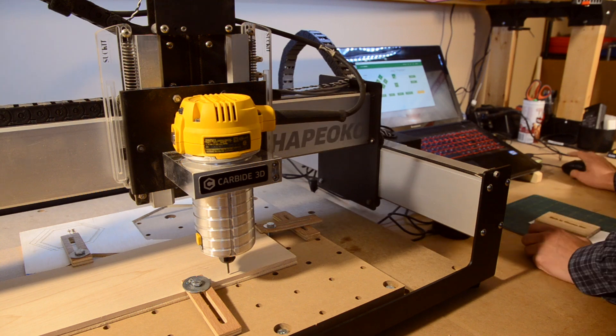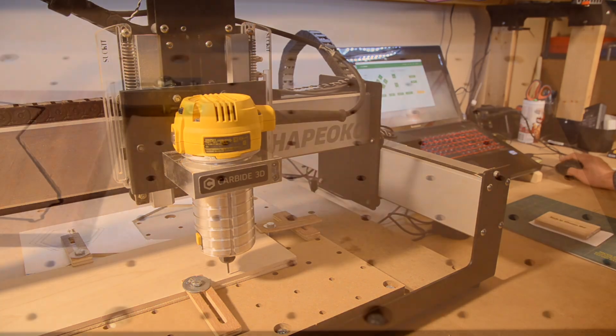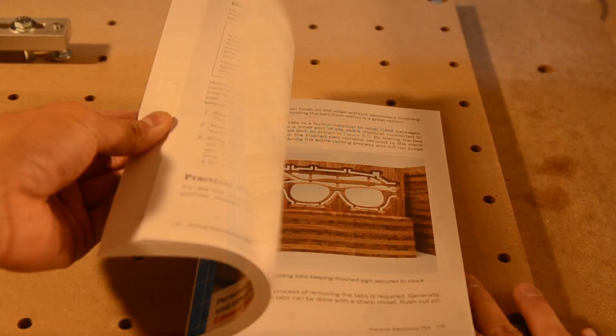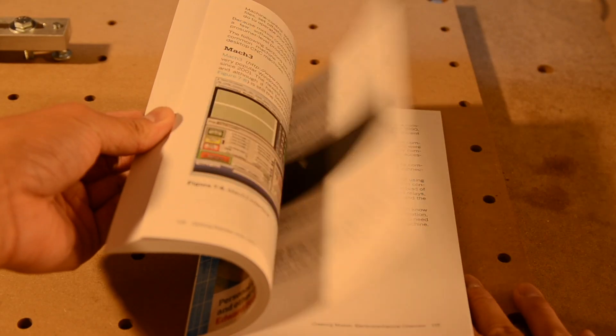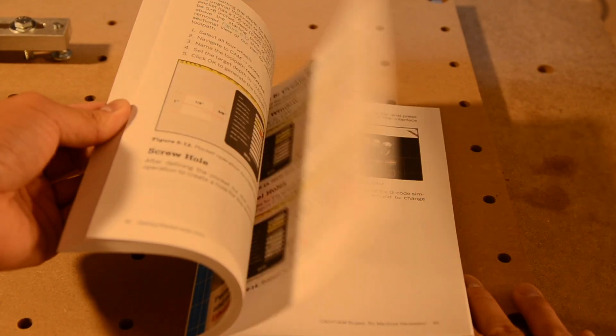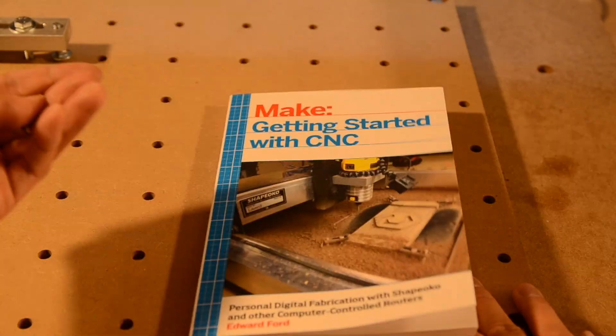If you want a deeper dive into the nitty-gritty, I'll point you to Edward Ford's book, Getting Started with CNC, available on Amazon, link in the description below. It's way more comprehensive than what I'm going to be covering because I think I'd bore you if this series was longer than about 20 minutes.